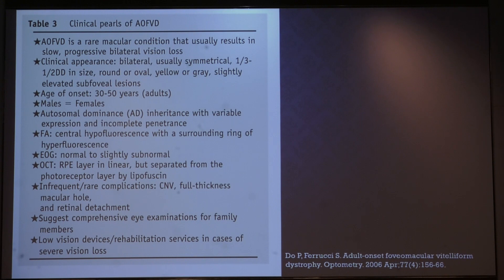Fundus angiography shows central hypo-fluorescence surrounded by a ring of hyperfluorescence. EOG may be slightly subnormal but is usually normal in most cases, and OCT shows hyperreflectivity below the RPE. Complications seen are CNVM and full thickness macular hole. In such cases, six-monthly comprehensive eye checkup is required for the patient along with family members, and low vision aids can be prescribed.